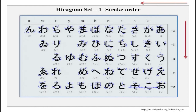First let us do the vowels. The vowels are — you can repeat after me: a, i, u, e, o. Once again: a, i, u, e, o.